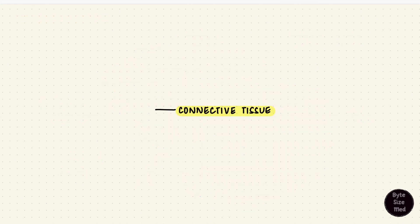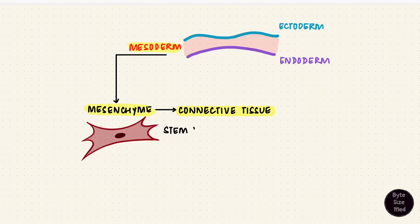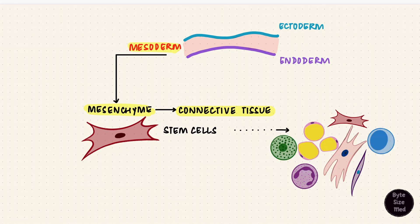Connective tissue develops from the mesenchyme, which comes from the mesoderm layer of the embryo. The embryo has three germ layers that give rise to all the organs in the body: the ectoderm, the mesoderm, and the endoderm. That mesoderm forms the mesenchyme, which contains stem cells that can differentiate into different cells that make up connective tissue. So mesenchyme is a type of embryonic connective tissue.